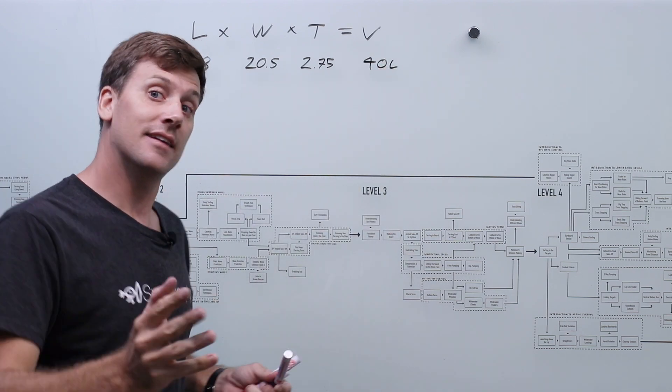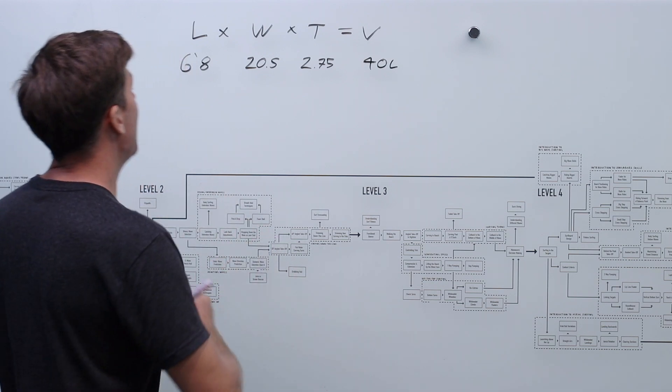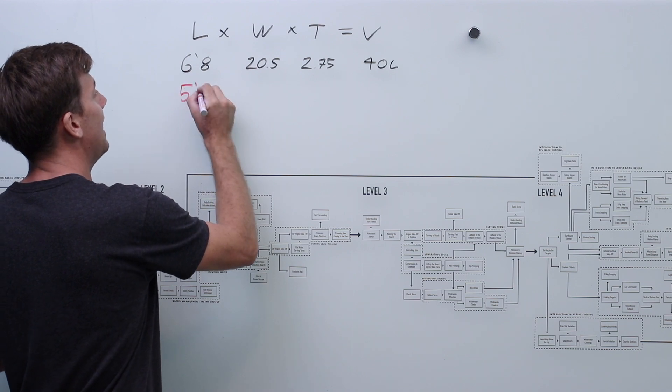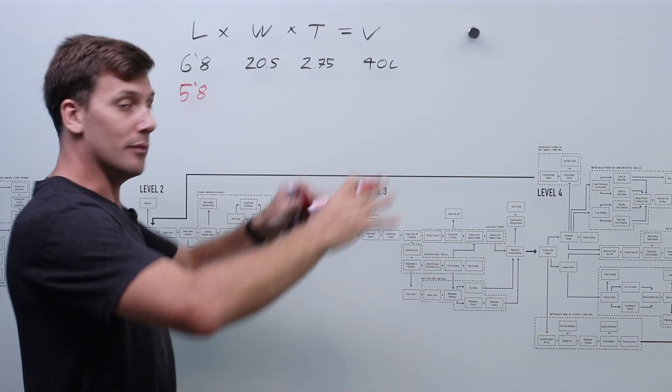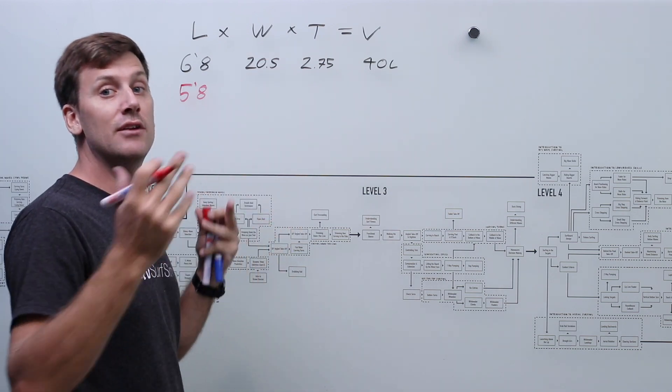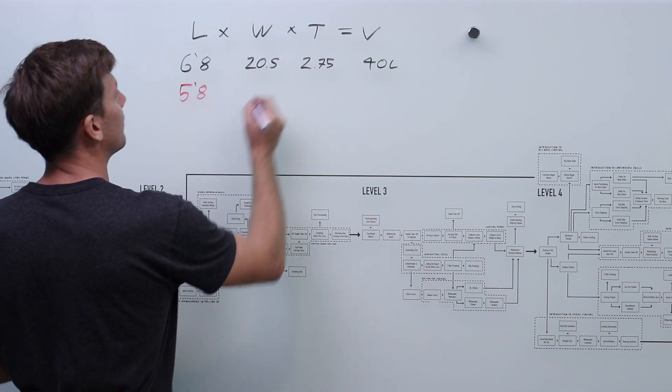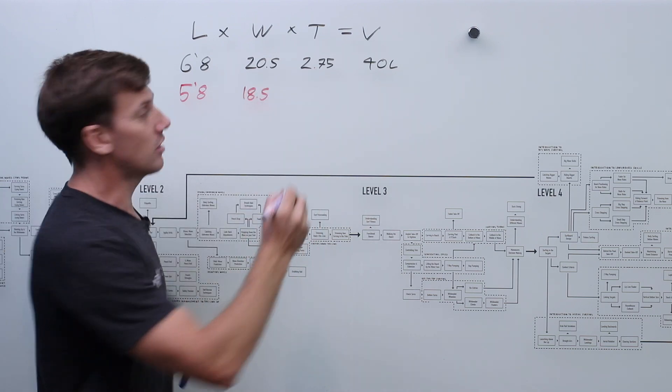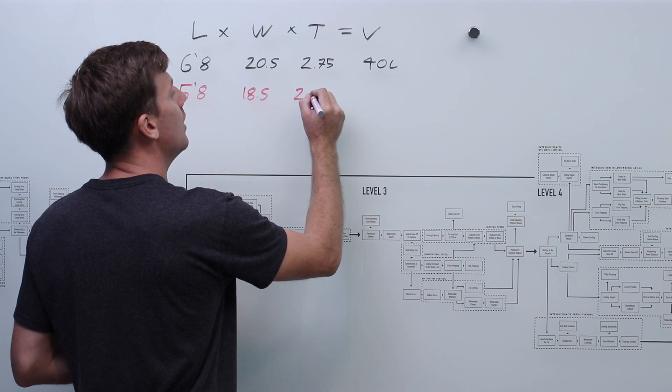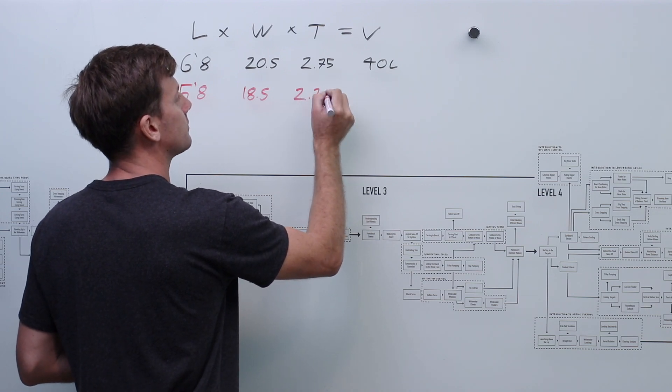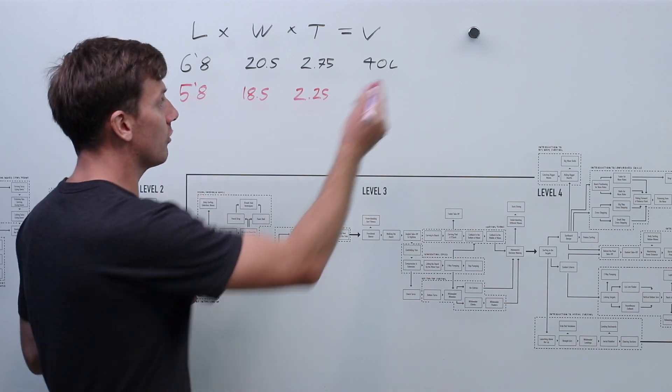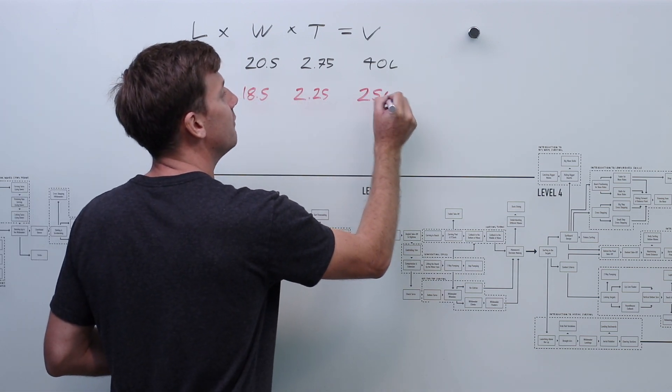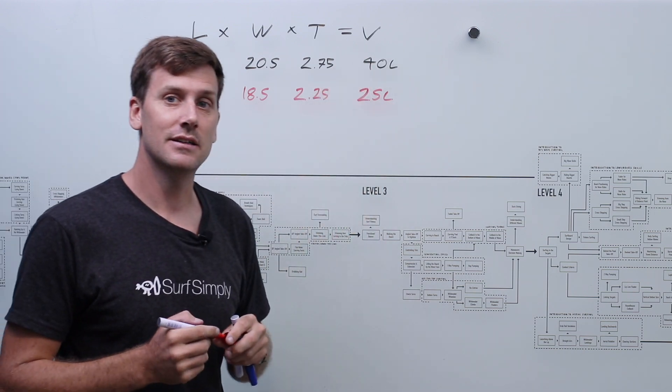Now they had exactly the same board, exactly the same model in a 5'8". Now that 5'8" was reduced down proportionally, it was exactly the same shape but in order to be the same shape they had to reduce the width down to 18.5 and they had to reduce the thickness down to 2 and a quarter. And the resulting volume was therefore smaller. All of these numbers were smaller. The resulting volume was 25 litres so almost half the size.